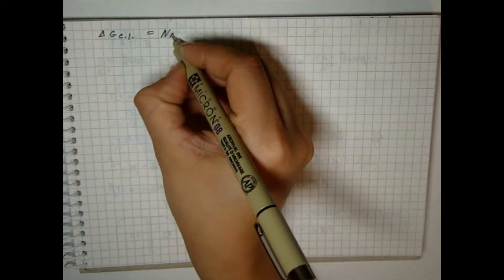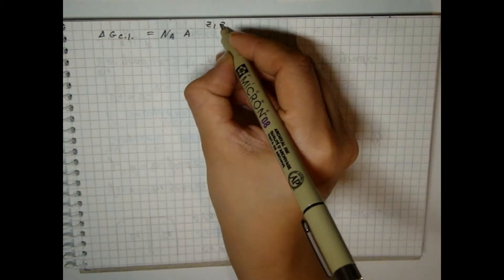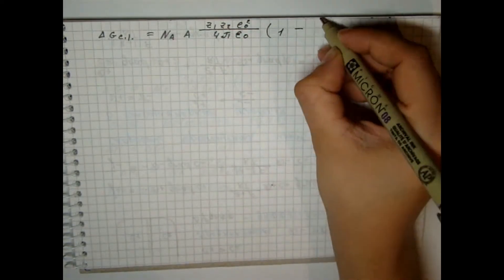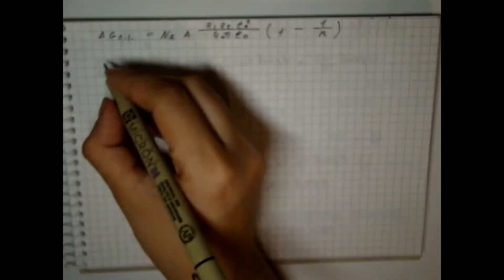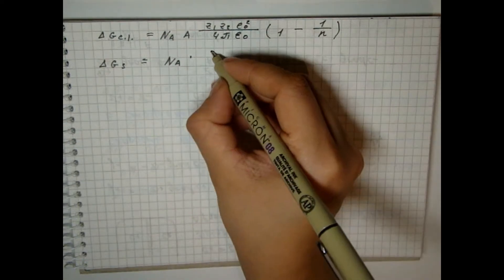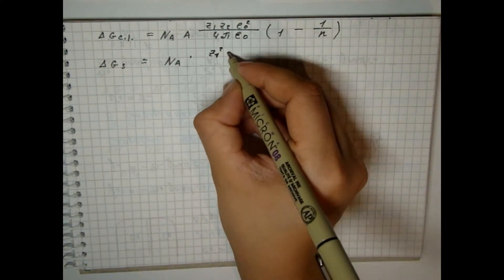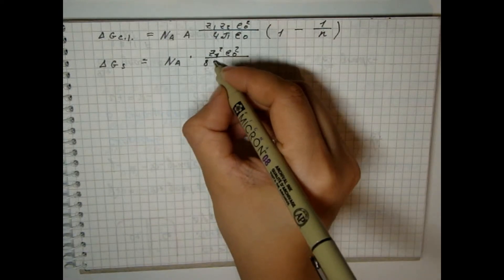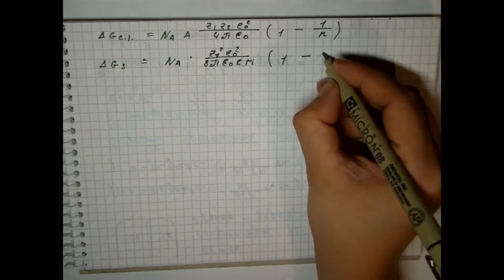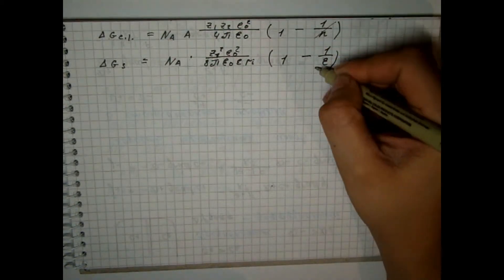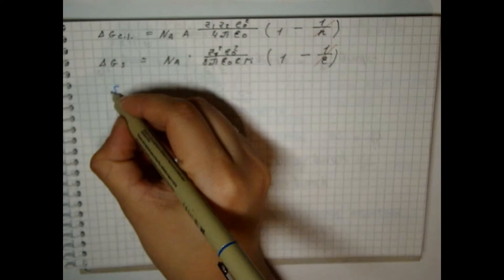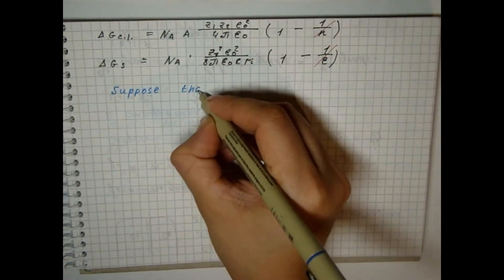Born model for the lattice energy, which we discussed in the last video. And Born model for the solvation energy. If in these formulas we neglect the values of unit per n and unit per epsilon compared to another unit and assume that...